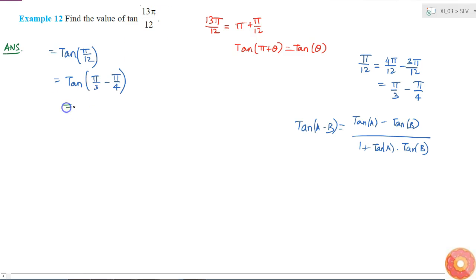So if I apply this formula, I'll put A is equal to π by 3 and B is equal to π by 4. What will I get? Tan π by 3 minus tan π by 4 divided by 1 plus tan π by 3 into tan π by 4. I know the values of all each of these tan functions.